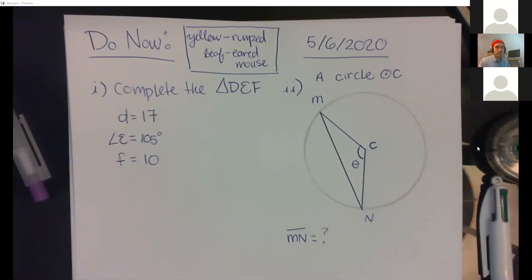Even though these two questions look different, they're actually not that different. Item number one: complete triangle DEF. I didn't draw it for you, but it doesn't matter — the information is unambiguous. You can draw it first and then solve, or just follow the rules. We can tell whether this is right or oblique, and whether it requires law of sines or law of cosines.